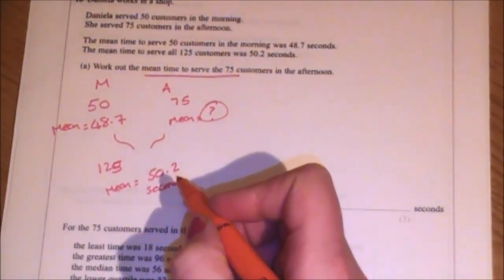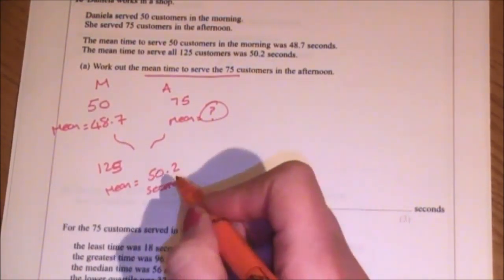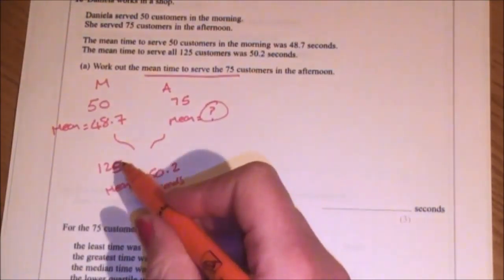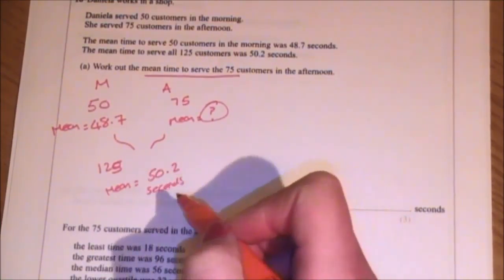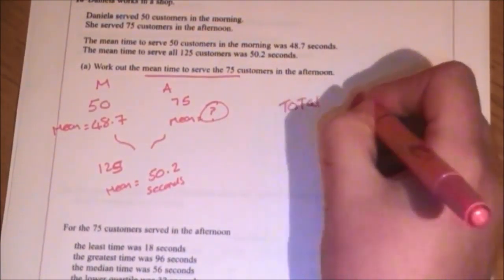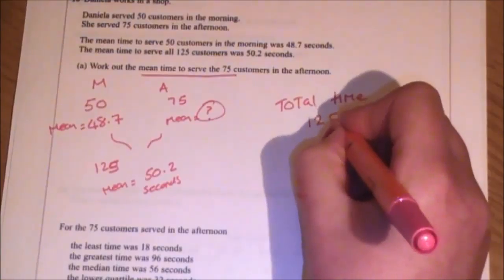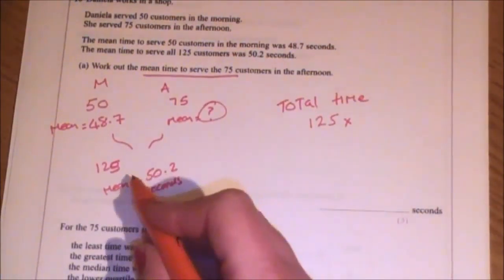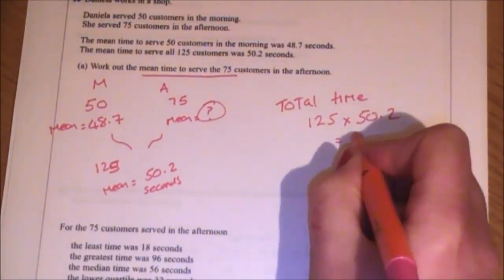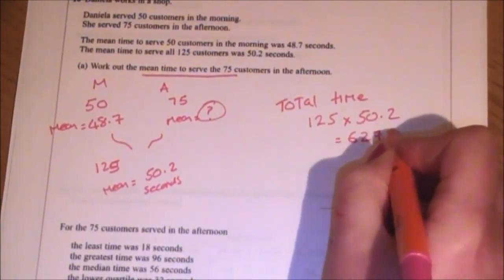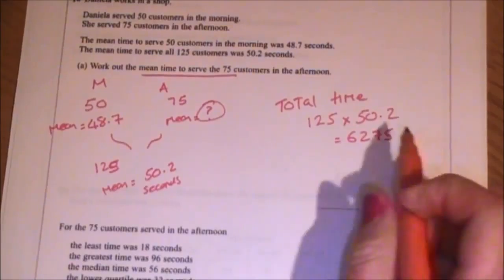Remember a mean is when you have the total of something divided by the number you have. So if you start with the mean and multiply it up by the number that it represents, then you'll end up with the total time. So let's find first of all the total time. And that's going to be 125 lots of 50.2 seconds. And when you do that, that gives you 6,275. So that's the amount of seconds that were served anyway.